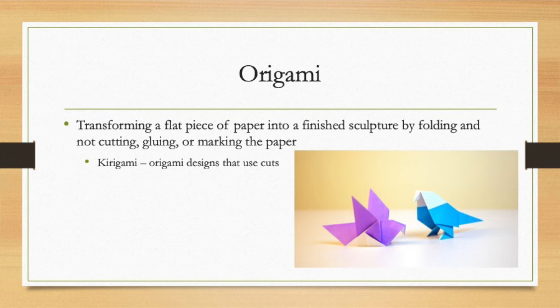The goal of origami is to transform a piece of paper into a finished sculpture by folding and not cutting, gluing, or marking the paper. Kirigami is origami where you can use scissors to cut into the paper, but today we'll just be doing origami.